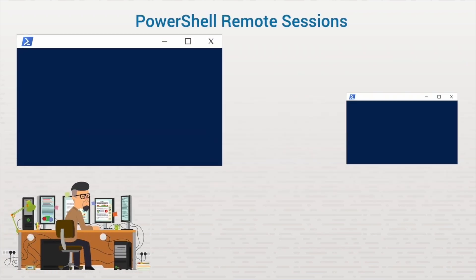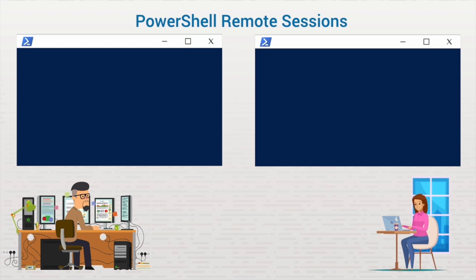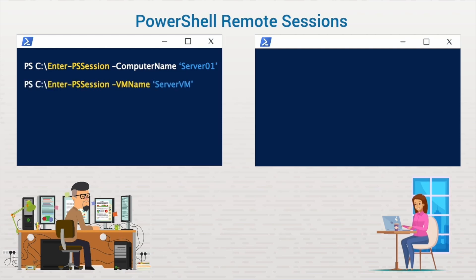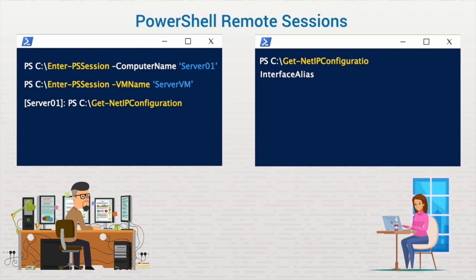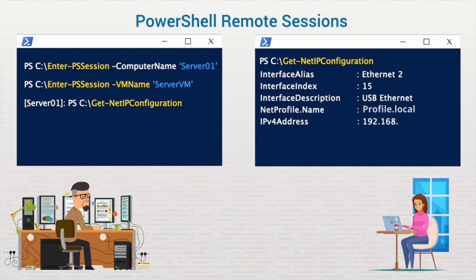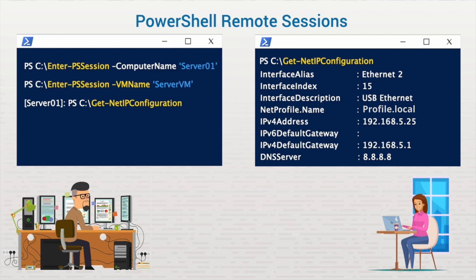Once PowerShell remoting is set up and configured, you can start a session by typing Enter-PSSession followed by the name of the computer. You can even create a session with a virtual machine from the host machine using Enter-PSSession -VMName followed by the name of the virtual machine. Once the session has been created, all commands typed will be sent to the remote machine. If you just need to send one or two commands without starting a new session, you can use the Invoke-Command cmdlet to send a quick script to the remote machine.